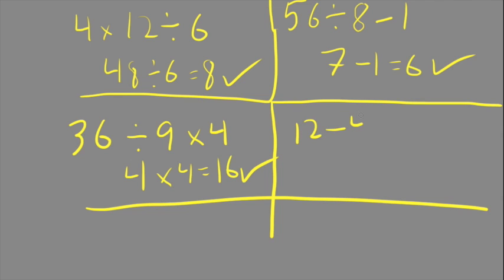12 - 4 + 2. Again, all addition and subtraction, we just work left to right. So 12 - 4 gives me 8, + 2 equals 10.